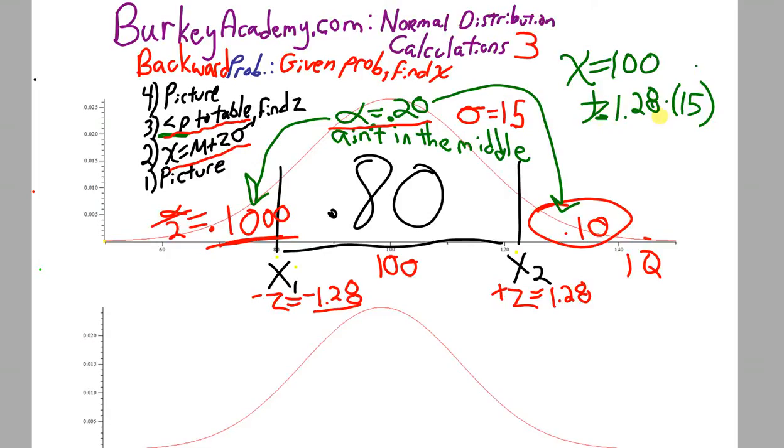So our two IQs are going to be 100 plus and minus 19.2. Or, this number right here, the low one, is going to be subtracting 19.2, and it looks like that's going to be 80.8. And this number up here is going to be 119.2. That's our method for finding this. You're given a probability that you want symmetric in the middle, and then how much is not in the middle is alpha divided in two, and that's the number you take to the z-score table to find your z-score. That's the probability, half of that alpha.